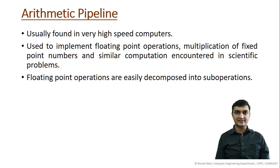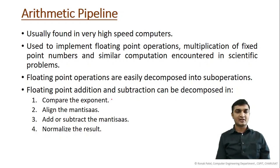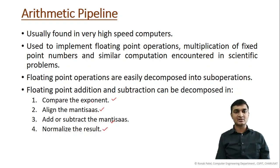Floating point addition and subtraction can be decomposed into four sub-operations: first, compare the exponents; second, align the mantissa; third, add or subtract the mantissa; and fourth, normalize the result. These are the four possible sub-operations when using floating point numbers for addition and subtraction.